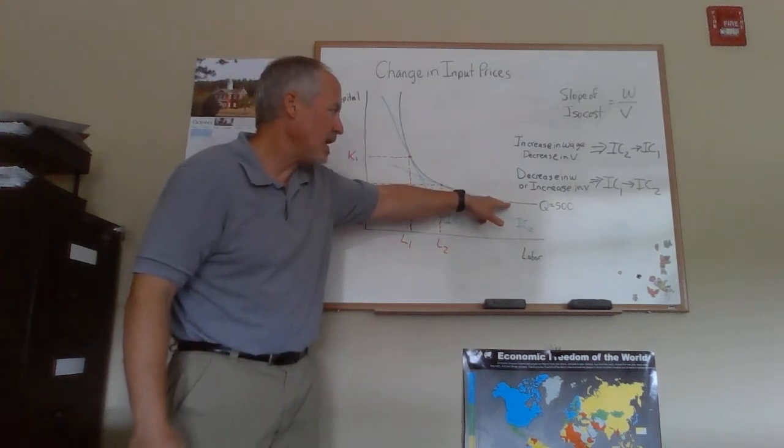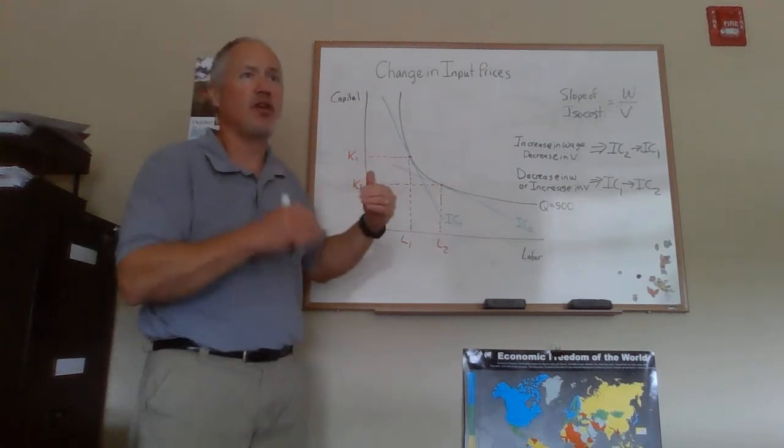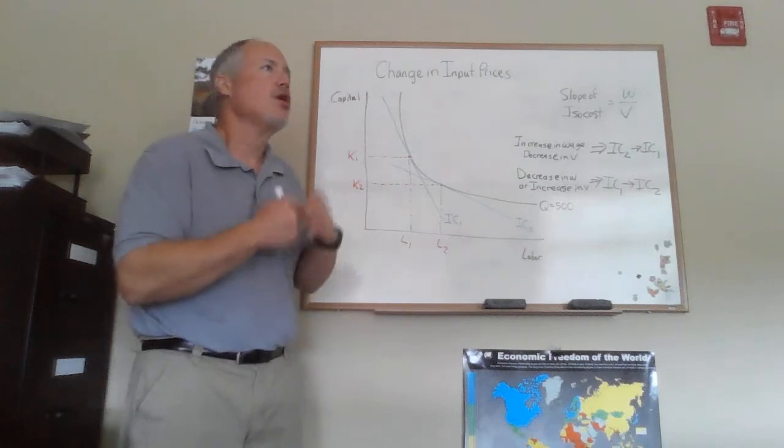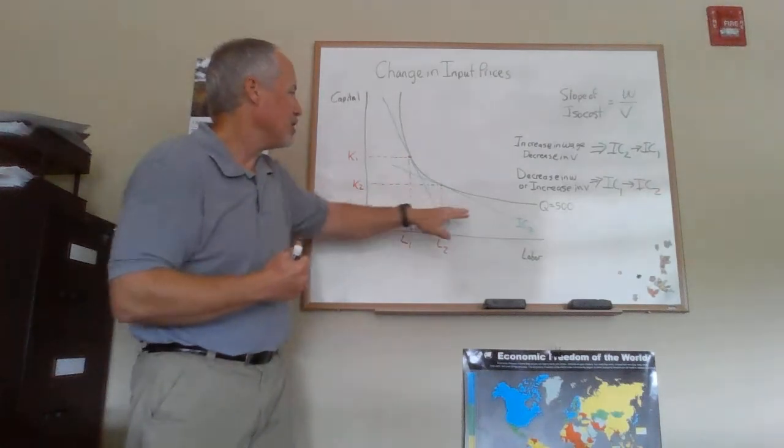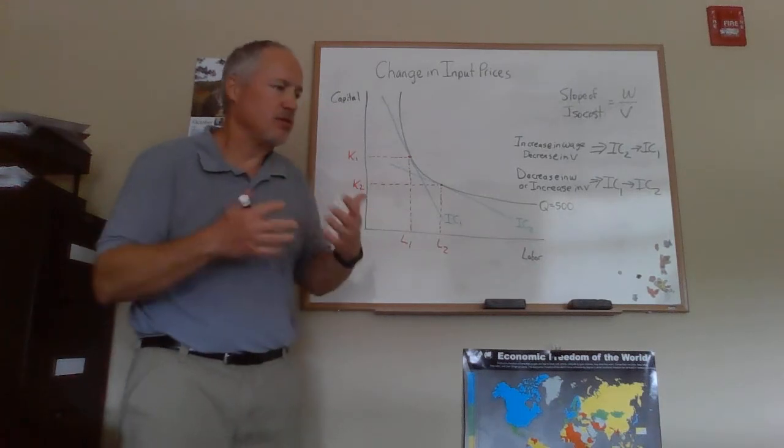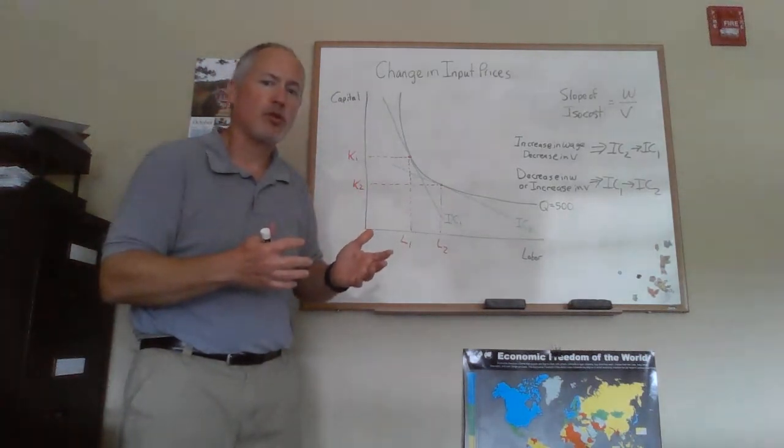We're going to say the firm's going to produce on this isoquant and then we just have isocost with changing slopes. So I've got this drawing with two different isocosts showing two different input price ratios.